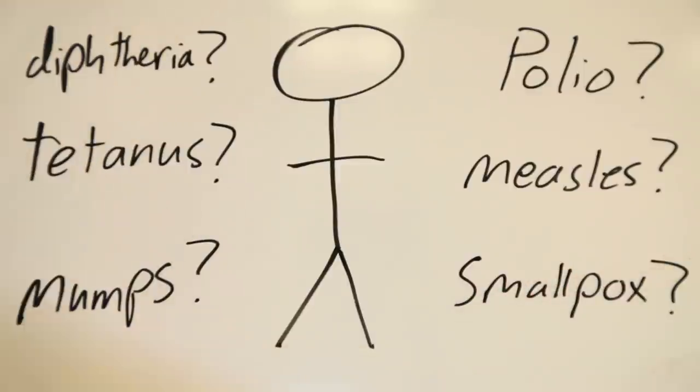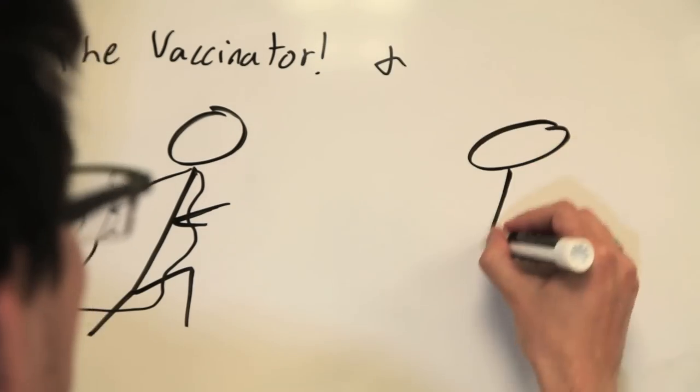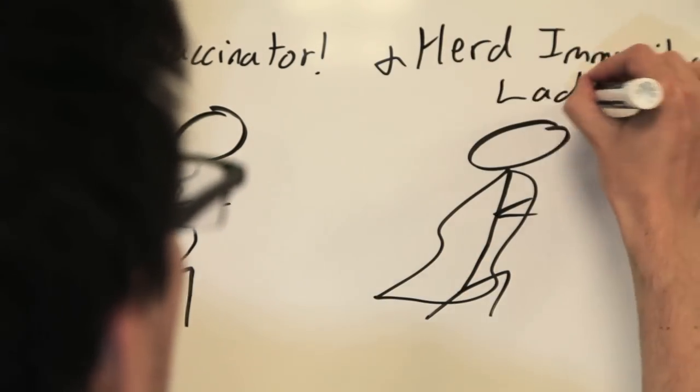If you live in the developed world, you probably don't know very many, which is a good thing, because those diseases are not only unpleasant, but potentially very deadly. And the reason that they are rather rare, if not eradicated entirely in the case of smallpox, is because of vaccines and the power of herd immunity.